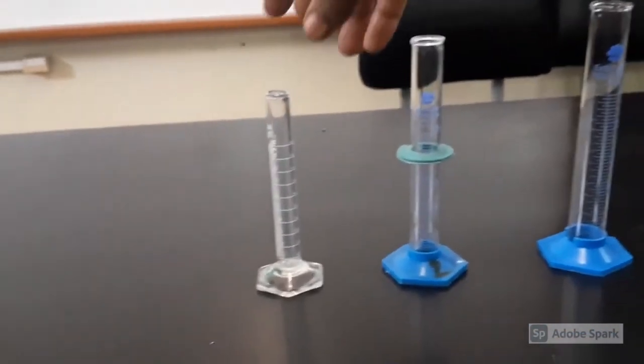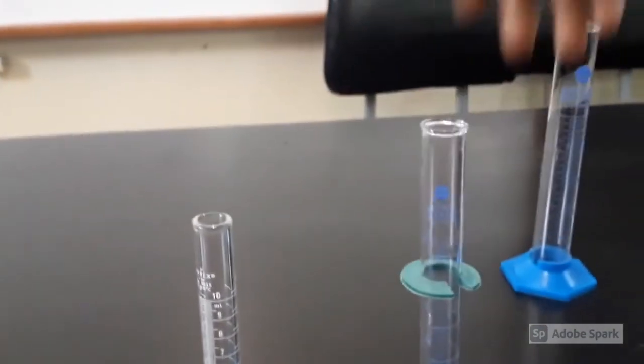Volumetric equipment are those equipment that you can use for measuring, while non-volumetric are those ones you can just use for holding. Even though they have calibration, they cannot be used for measuring. Examples of volumetric, we have the measuring cylinder. This is a size 10 mil, this is 25, and this is 50.